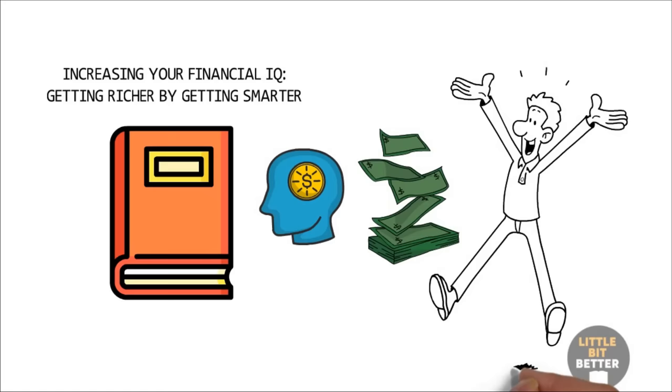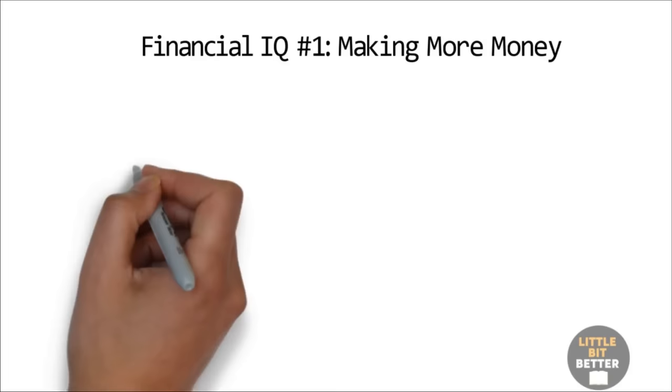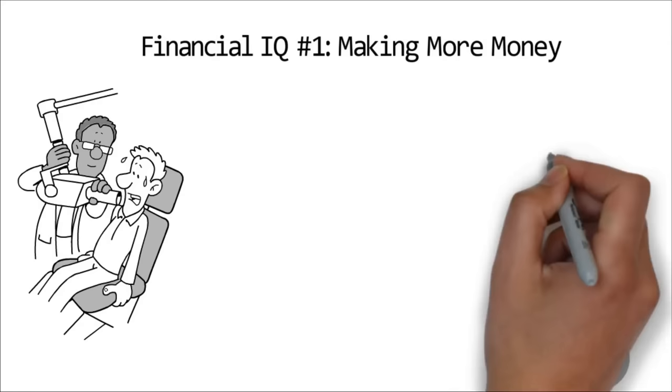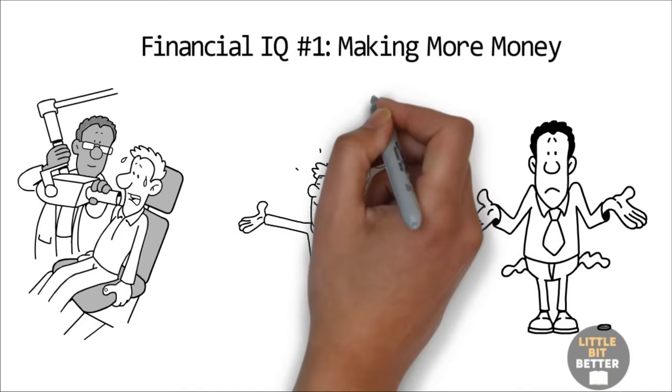Financial IQ number one, making more money. If you have a toothache, it means you have dental problems. To solve the problem and stop the pain, you visit a dentist. In the same way, if you are not earning enough money, it means you have money problems. If you start solving the money problems, the pain of not having enough money will go away, just like your toothache.